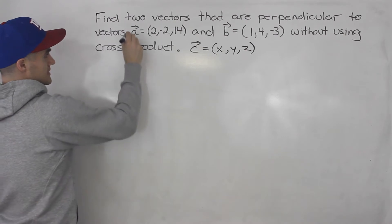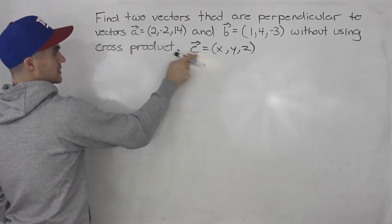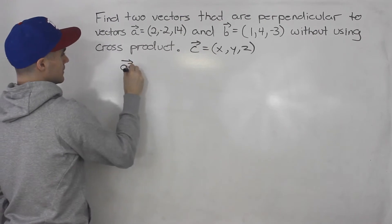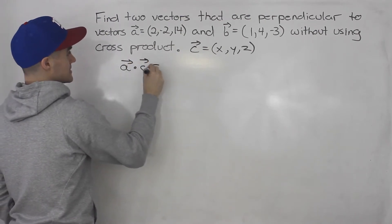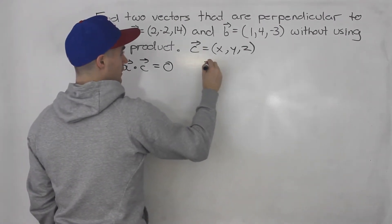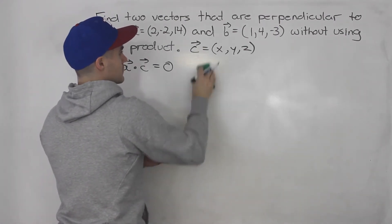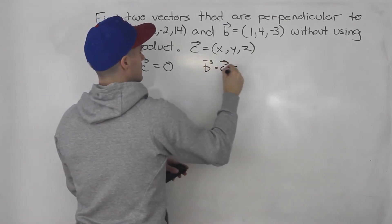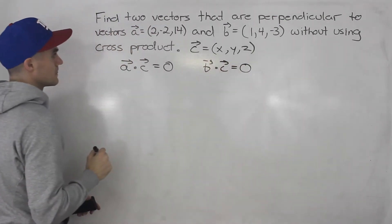So basically what that means is that since this vector is going to be perpendicular to both of these, then the dot product between A and C is going to equal zero. Also, the dot product between B and C is going to equal zero as well.